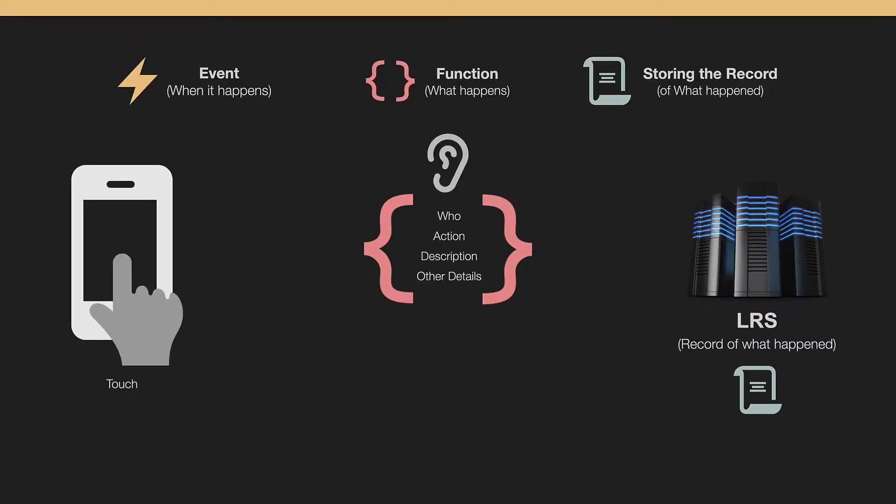The different events could be something like touch, a click, or a shake if the user shakes the device. It could be when media starts or completes — audio or video — or when the media reaches a certain point. This gives you all this information to track in more detail. A lot of the time we spend a big budget creating a video, but we don't know how effective it is. Did they really watch the video, or did they jump to the next page, or pause at a certain point? Knowing that helps you create better learning.